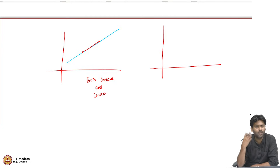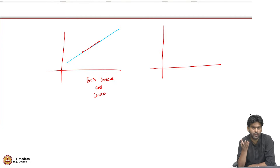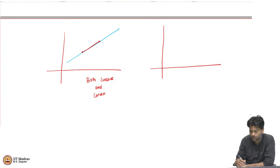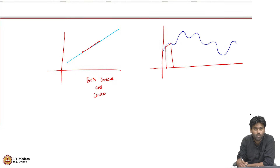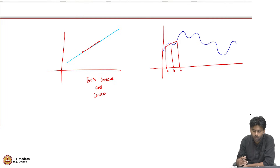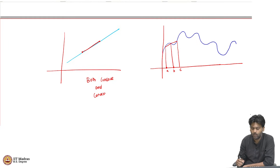The next question is: are there functions which are neither concave nor convex? Of course there are. Consider a function shaped something like this — it is neither concave nor convex because I can choose two points where the linear interpolation is below the function value, so it cannot be convex, and then choose another pair of points where the linear interpolation is above the function value, so it cannot be concave either. So it is neither concave nor convex.